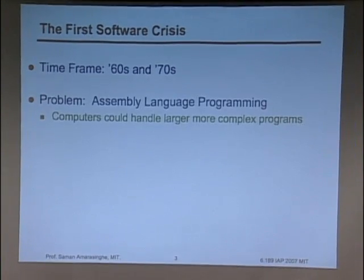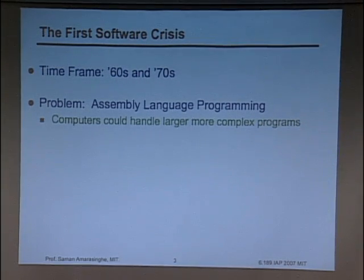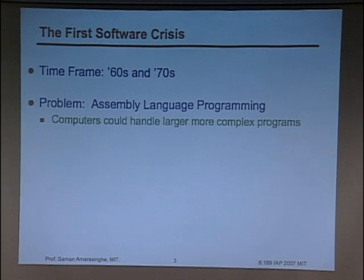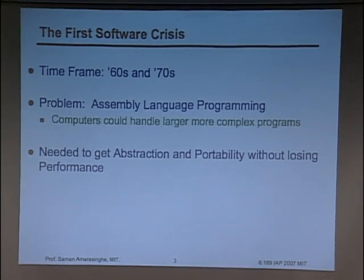The problem for the first software crisis was people were writing assembly language programs. When the computers were small and memory was small, it was completely doable — no problem. But as computers became larger and larger, it became very hard to write assembly language programs. What you needed was some kind of abstraction and portability, so you wouldn't have to rewrite programs every two years.